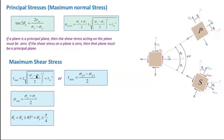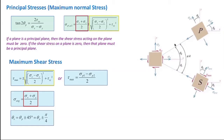Looking at the principal stress and the maximum shear stress equations, there is a similar term repeated between them, shown in the yellow box. Also, the first term in the principal stress — the average of the normal stress — is equal to the normal stress expected on the maximum shear stress plane. The angle needed to rotate from the principal plane to the maximum shear stress plane is always 45 degrees, or pi over 4.